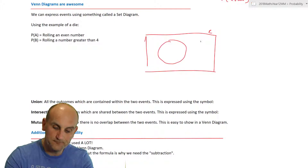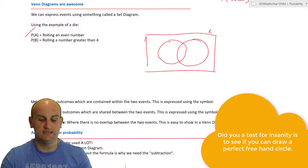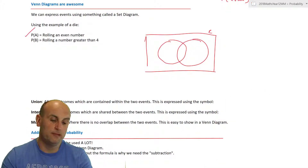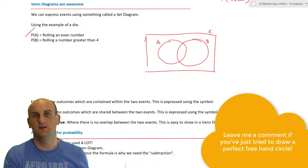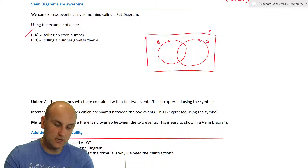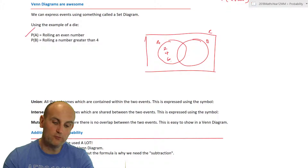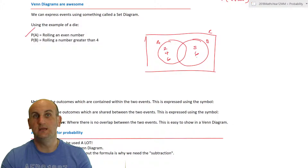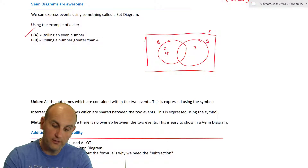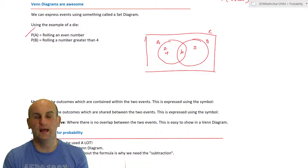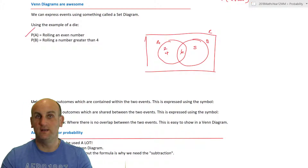To describe each event we draw a circle. I have two events: P(A), the probability of rolling an even number, and P(B), the probability of rolling a number greater than four. I put 'A' beside one circle and 'B' beside the other. Everything inside the circle is an outcome. Rolling an even number gives us 2, 4, and 6. Rolling a number greater than four gives us 5 and 6.